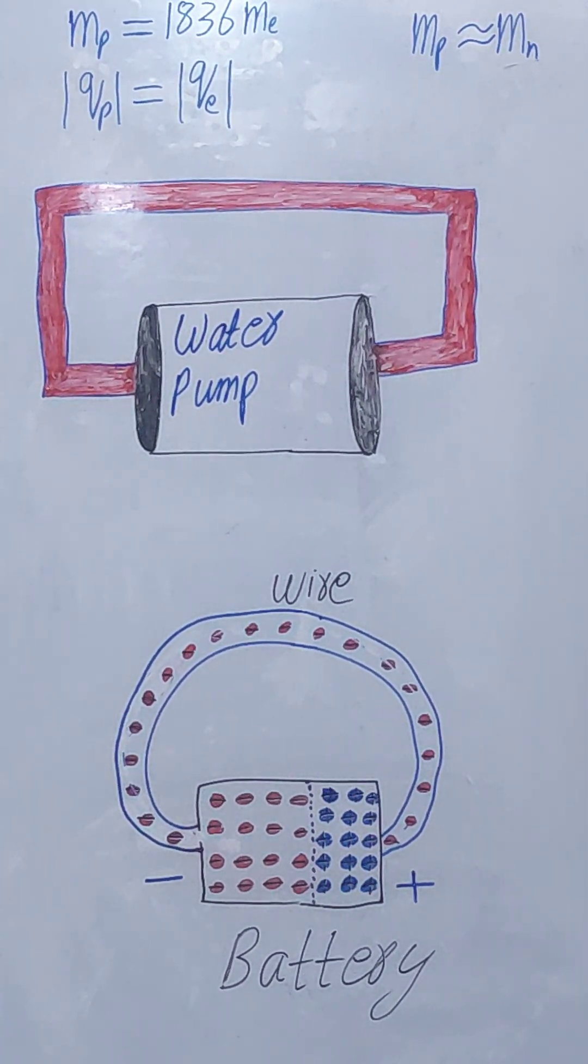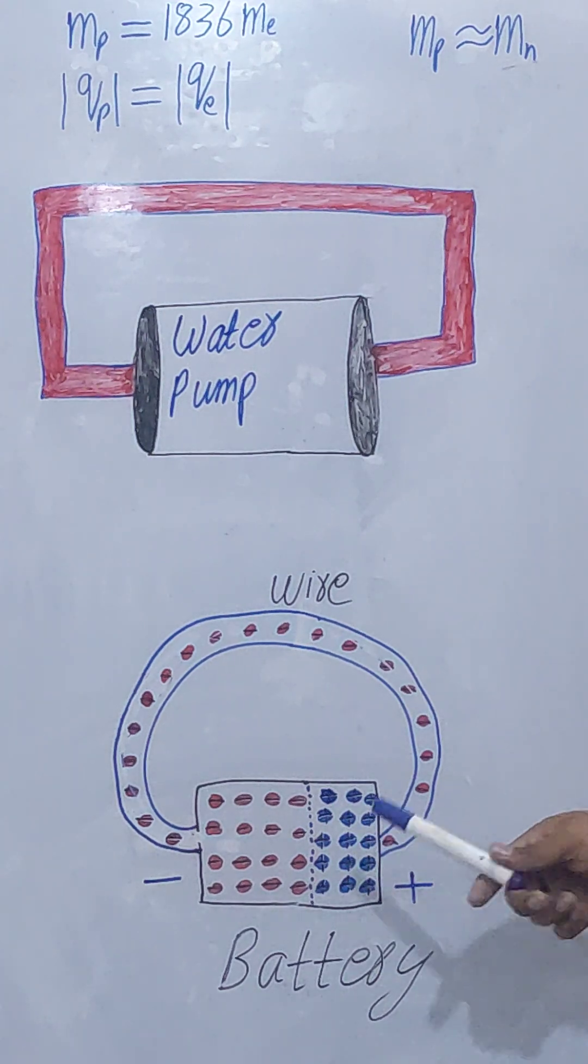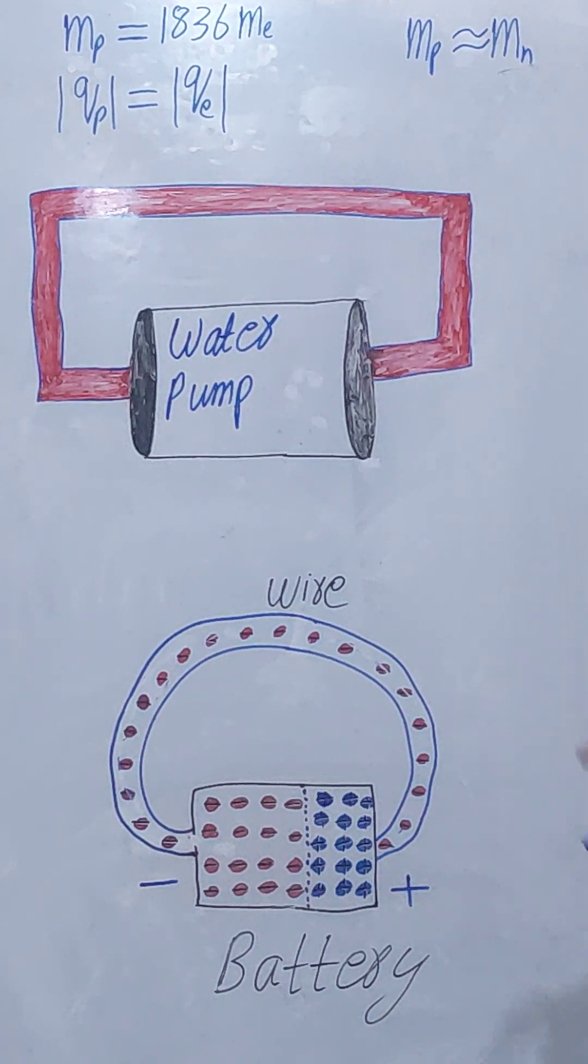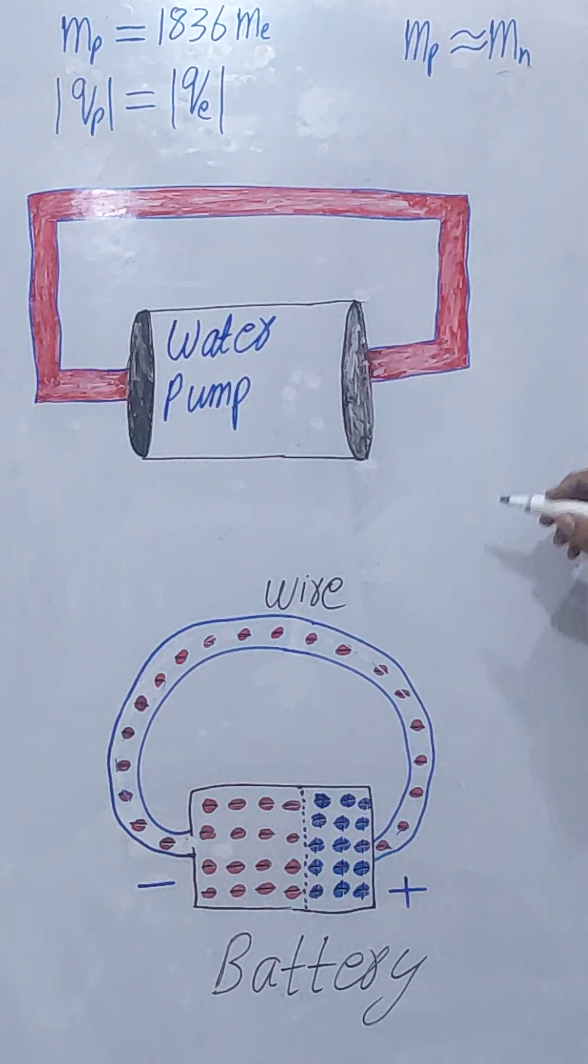Now, a question arises: why do the positive charges not flow? The positive charges, protons, are 1836 times greater than electrons.